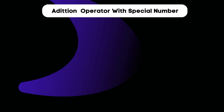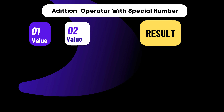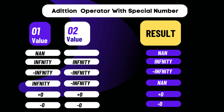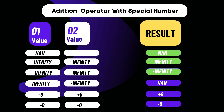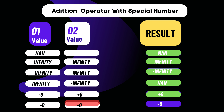There are also special numbers in JavaScript, which are very important for interviews. If you apply addition with NaN, the result is NaN. Infinity plus Infinity gives Infinity. Minus Infinity plus minus Infinity gives minus Infinity. Plus zero plus zero gives plus zero, and minus zero plus minus zero gives minus zero.